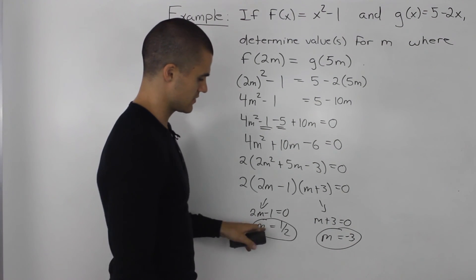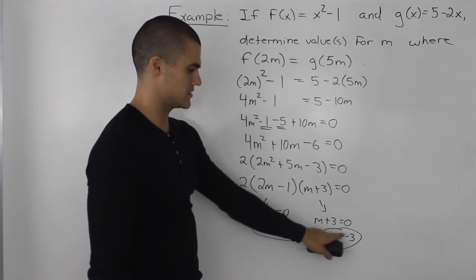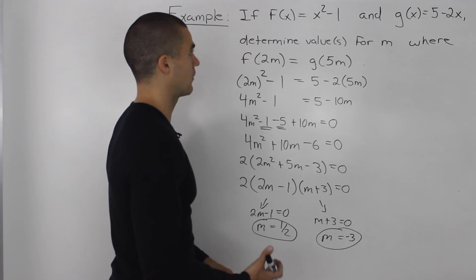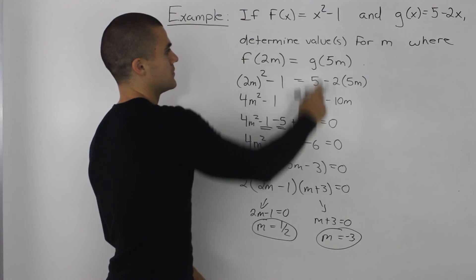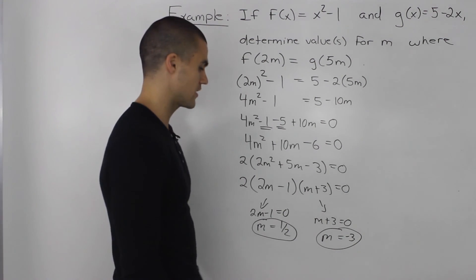So these two answers here, m equals 1 half and m equals negative 3, are our final answers for this question when f of 2m is equal to g of 5m.